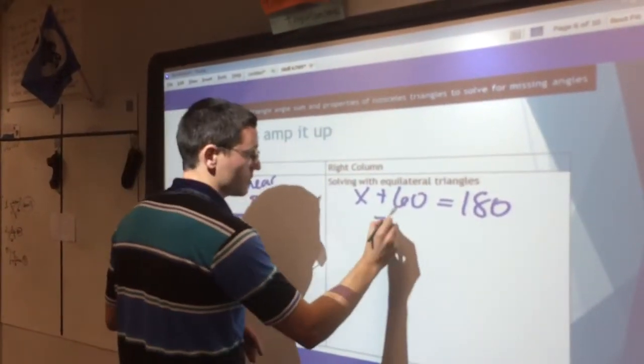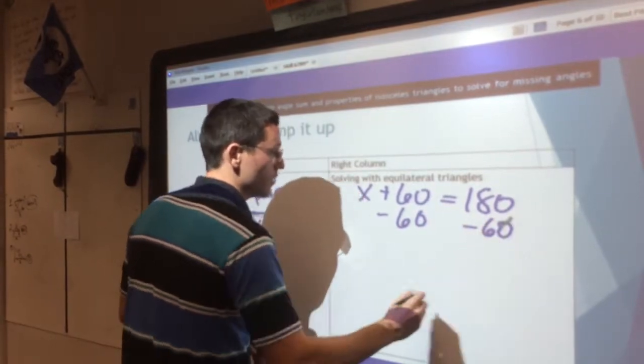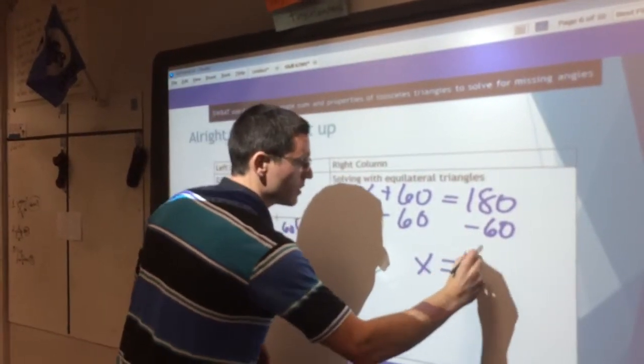To get x by itself, this is just one step. We're just going to take away 60 on both sides. We find that x here is 120.